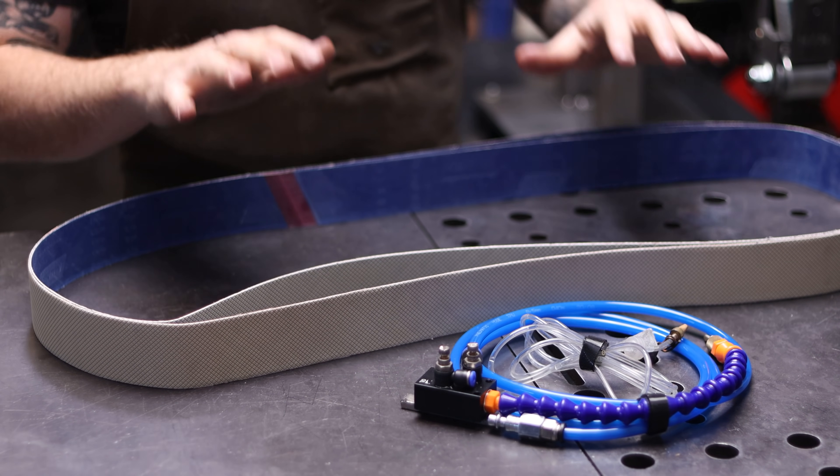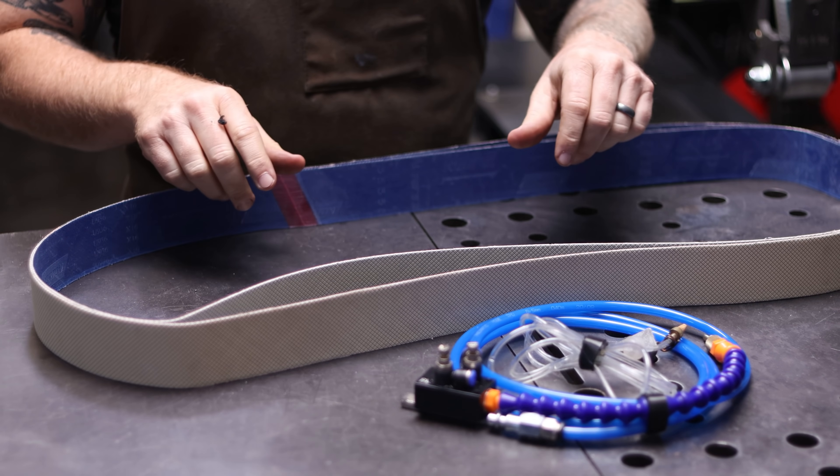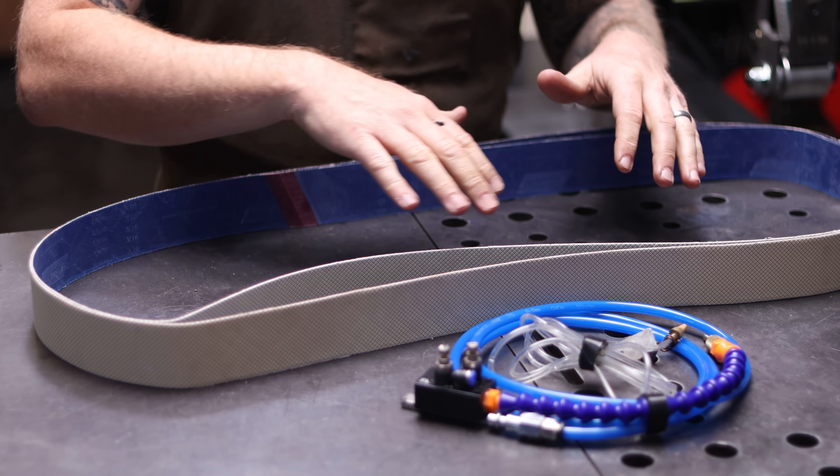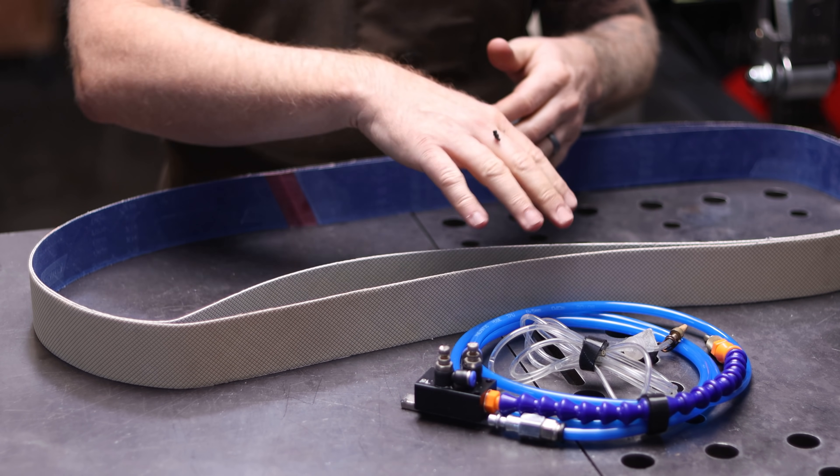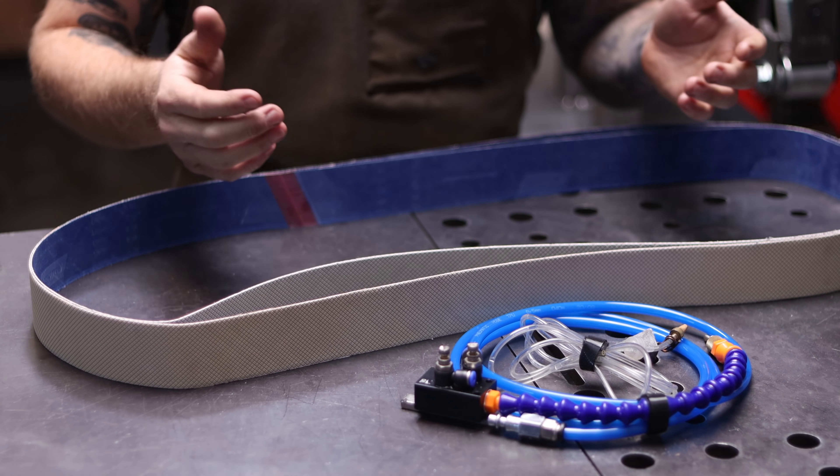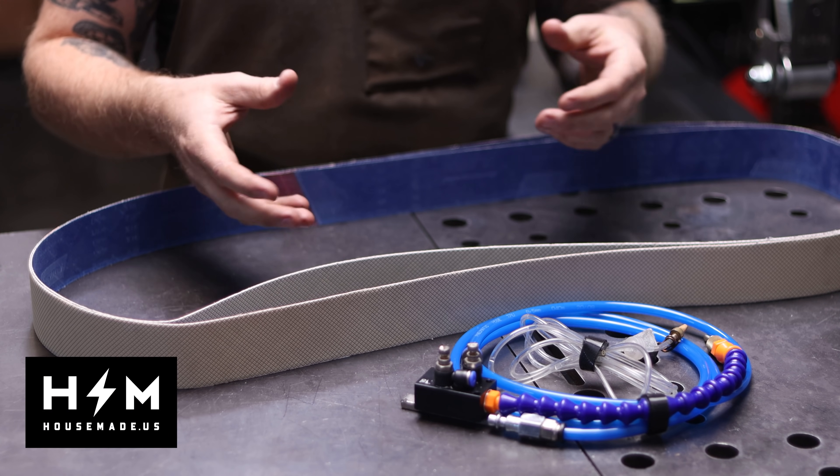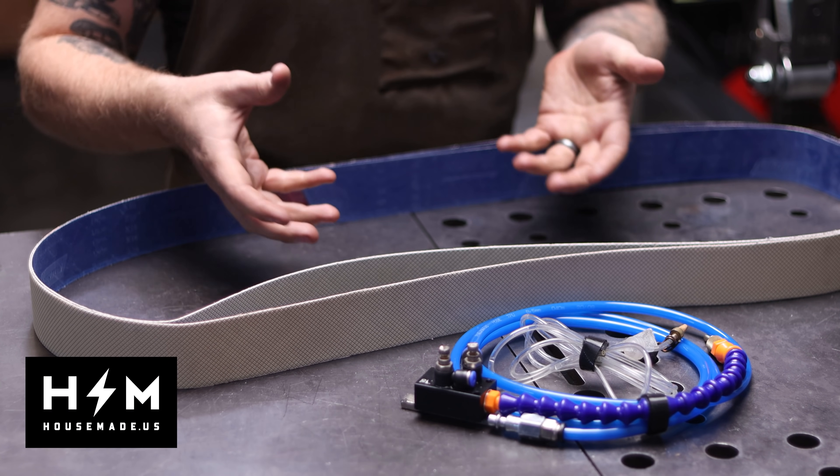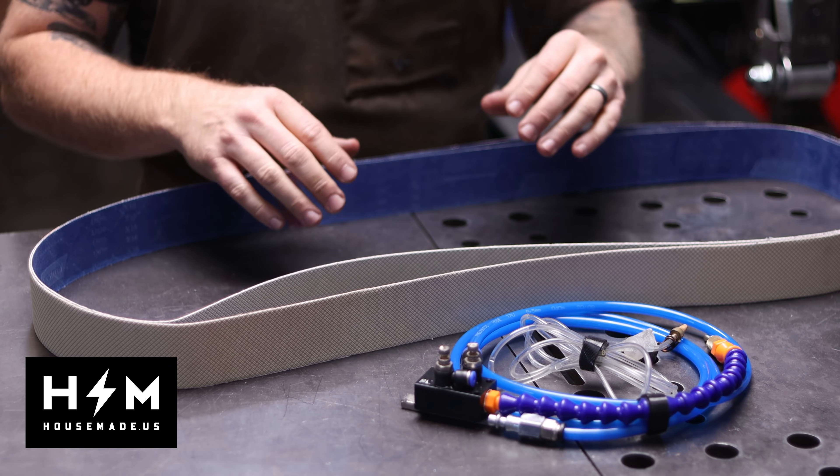All right, let me show you what my secret is to sharpening a knife safely on my 2x72. You're going to need a few things. Now, links for all of this is down in the description. You can source all these things yourself and you can obviously go online and buy them. Or if you want to go to my website, I have a kit that I've put together, housemade.us, and you can just buy the kit and I'll ship you all of this stuff. I'll assemble it so you don't have to mess with it at all.